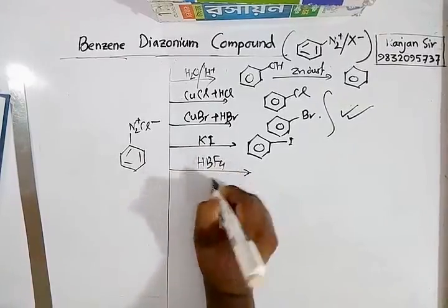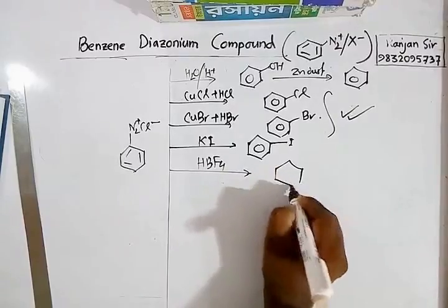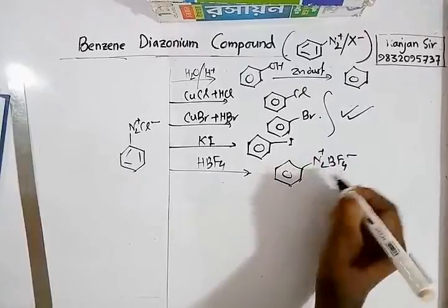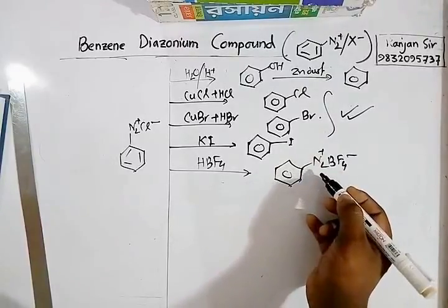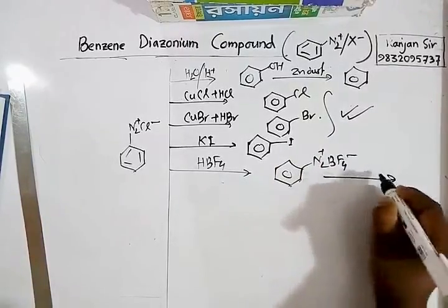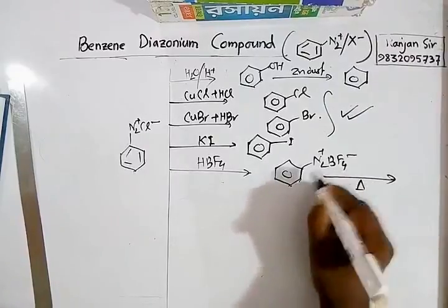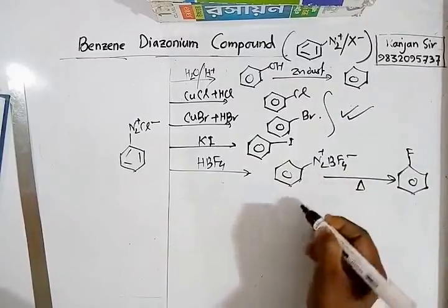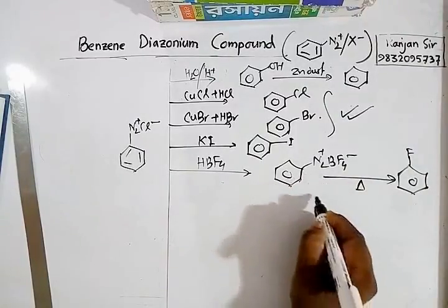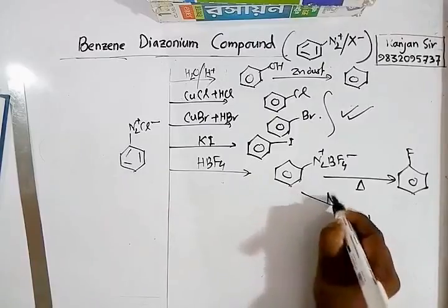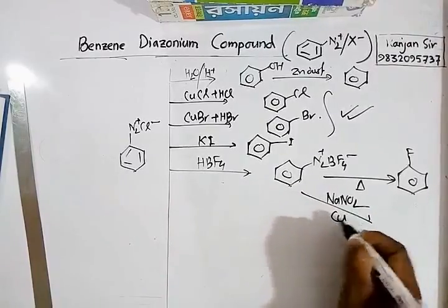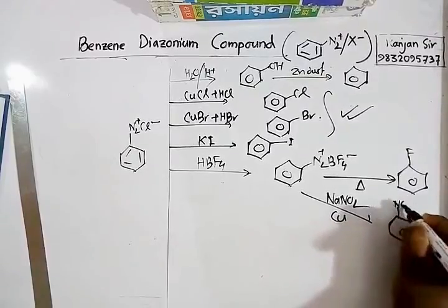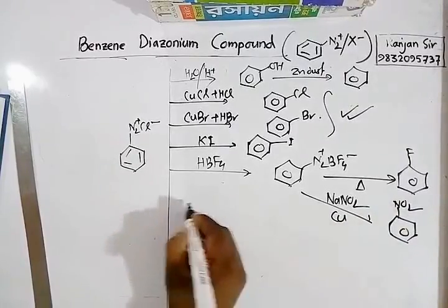Fluorobenzene can also be prepared from benzene diazonium chloride by adding HBF4 (fluoroboric acid). The intermediate compound is benzene diazonium fluoroborate (N2+ BF4-), which is unstable and on heating gives fluorobenzene. If you add NaNO2 in the presence of copper, you also get nitrobenzene.